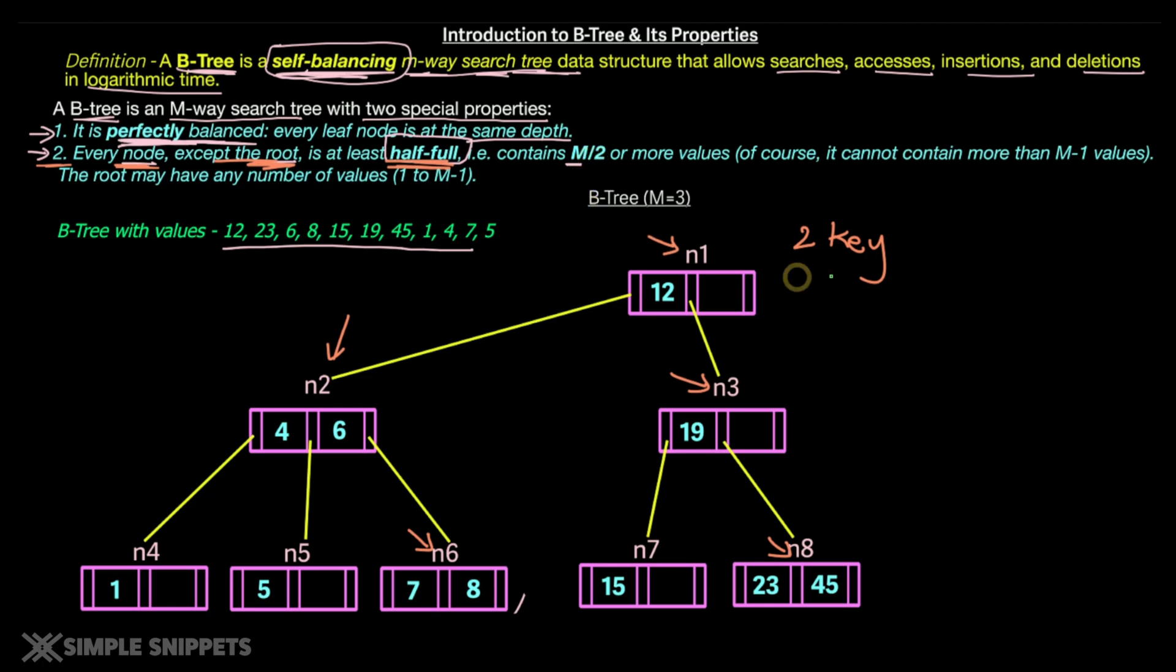Which means each node contains M by 2 values. So M is nothing but 2. M by 2 is equal to 2 by 2 which is equal to 1. So every node at least has one particular key inside it. So this condition is also true. Hence now you can say that this is a proper B-tree. So this was the main difference between B-tree and M-way search tree. Again to reiterate, B-tree is also a M-way tree with two special properties. One of them is self-balancing and the other one is that every node except the root node has to be at least half full. So this is much more efficient compared to the M-way search tree because it is balanced.